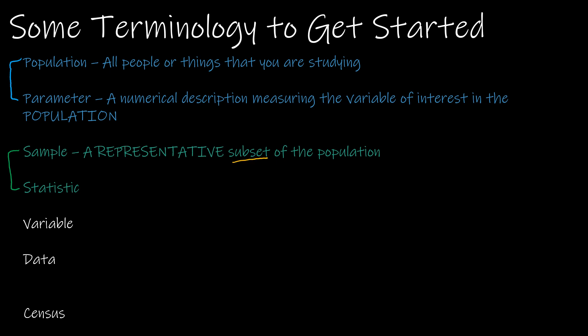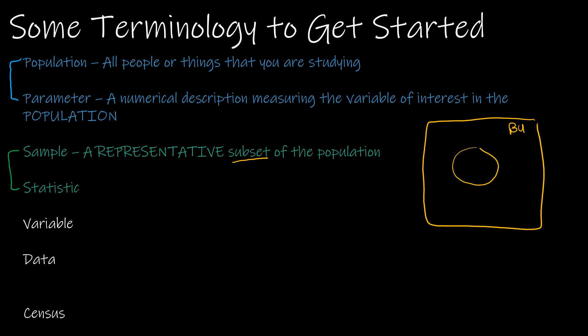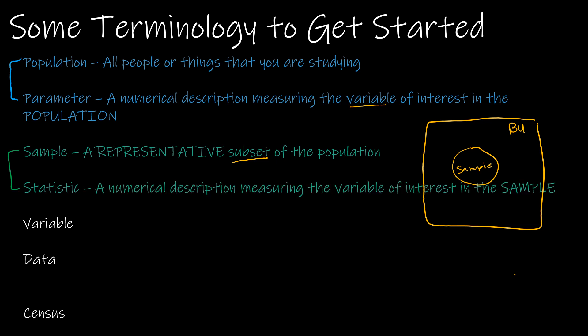I'm using the word subset — if this rectangle represents all BU students and it's too difficult to talk to every member of that population, I'm going to take just a small subset of that population. This is my sample. I'm going to talk to a smaller group of students and study the exact same variable. When we're talking about something we're measuring for a sample, it is called a statistic — not statistics.